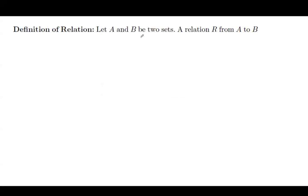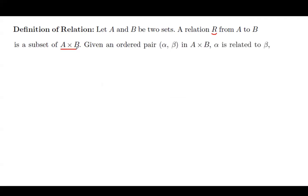In the next topic, we are focusing on relations. The definition of a relation — let us explore the relation itself. Suppose you have two sets A and B. A relation R from set A to set B is basically a subset of the Cartesian product between A and B. So we are having an ordered pair, or a set of ordered pairs, from the Cartesian product between two sets.